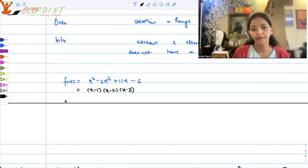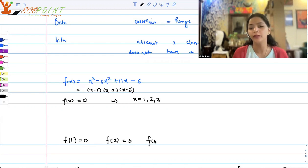Which means that if you put f(x) equals to 0, you would realize that x is taking three values: 1, 2, and 3. Which essentially means that f(1) is 0, f(2) is also 0, and f(3) is also 0.